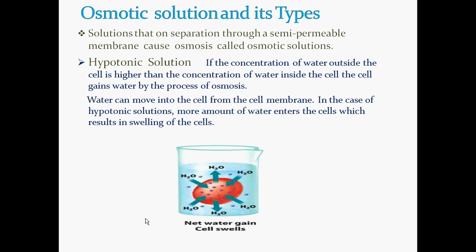So there will be movement of water through both sides — inside the cell as well as outside the cell. There are certain arrows pointing inwards and certain arrows pointing outwards. That means the movement of water is in both directions, but there will be more movement of water inside the cell, that is this RBC. And in this case it will get swelled up because there is more movement of water inside the cell.